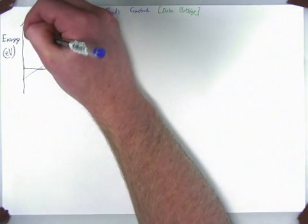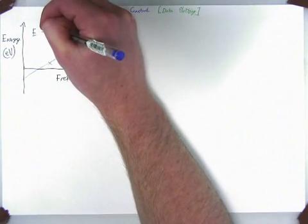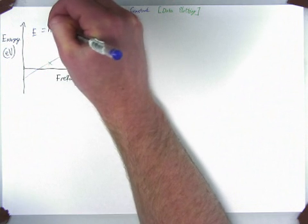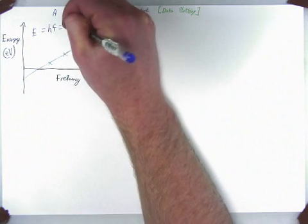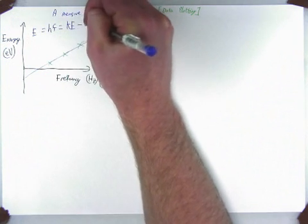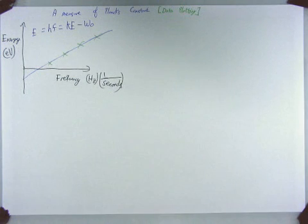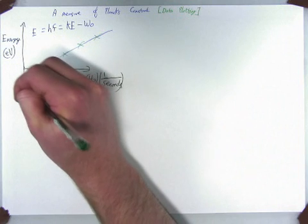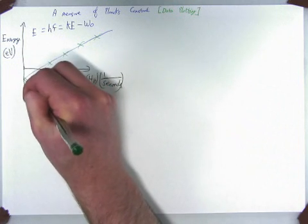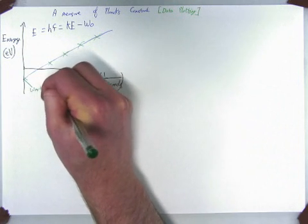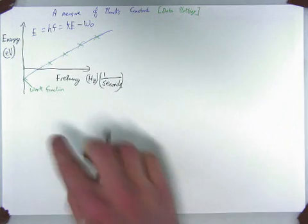Now, our energy E equals HF, which equals the kinetic energy of the electron minus the work function. Now, the work function, this is our intercept, this is our work function. This is our intercept, which you might have seen in other videos.